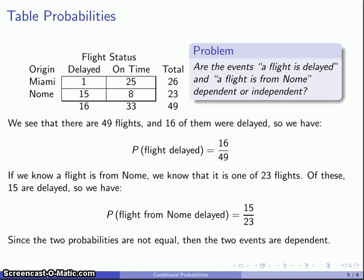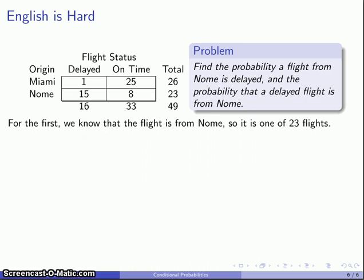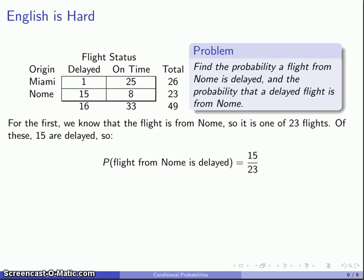What makes this problem difficult is the English language, because we tend to talk about conditional probabilities in a way that makes it hard to disentangle what we know and what we are uncertain of. Consider this problem: find the probability a flight from Nome is delayed. Taking that sentence apart, what we know is that the flight is from Nome. So we look at those 23 flights altogether, and what we don't know is whether the flight was delayed. Our probability is the 15 delayed flights out of the 23 flights from Nome — so 15 out of 23.